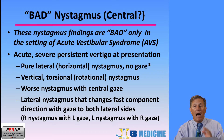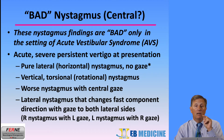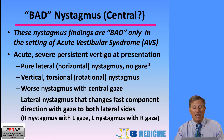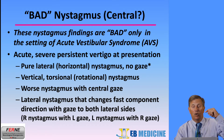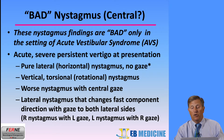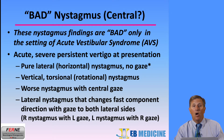In an acute vestibular syndrome, the types of nystagmus that suggest a central etiology include: number one, without gaze stimulation, an apparent constant lateral nystagmus occurring with central gaze; number two, vertical or torsional nystagmus — vertical meaning up and down, torsional or rotational meaning circular. These types of nystagmus in acute vestibular syndrome are suggestive of a central etiology.